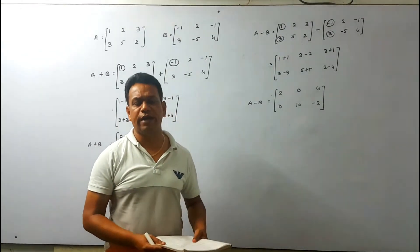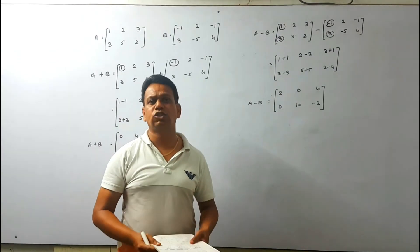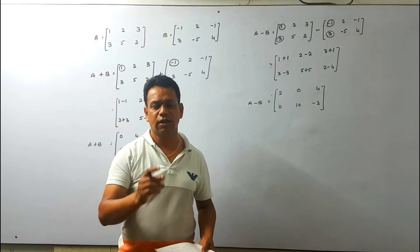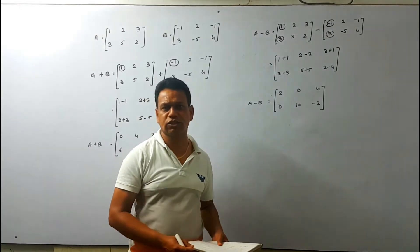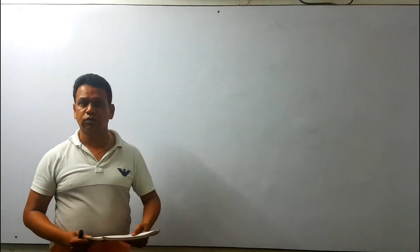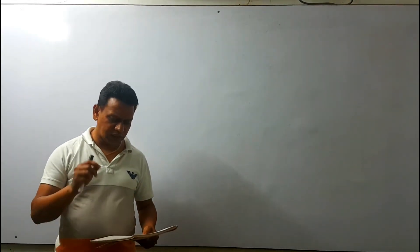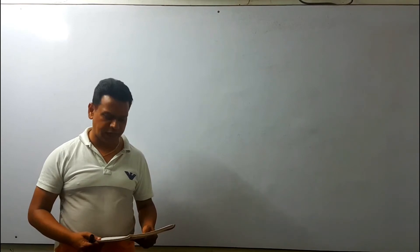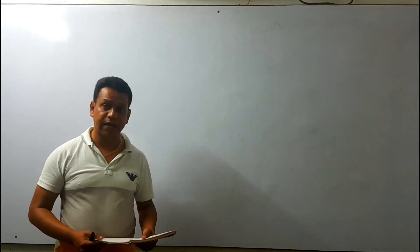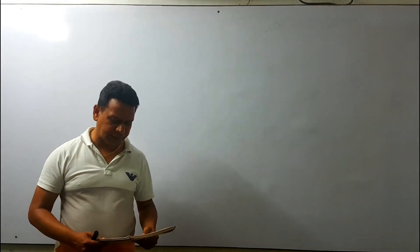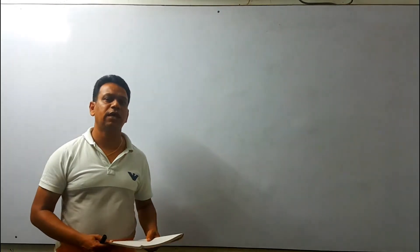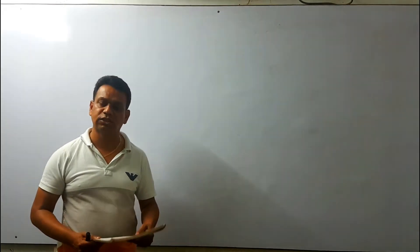This is a very easy question, my dear friends, and this chapter is also very easy. Now we move to the next question. Using the given matrices, obtain A plus B minus C and identify the matrix obtained by the process. We have 3 matrices available and we have to compute A plus B minus C.